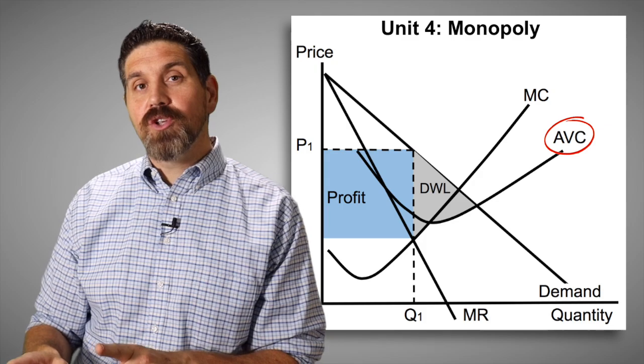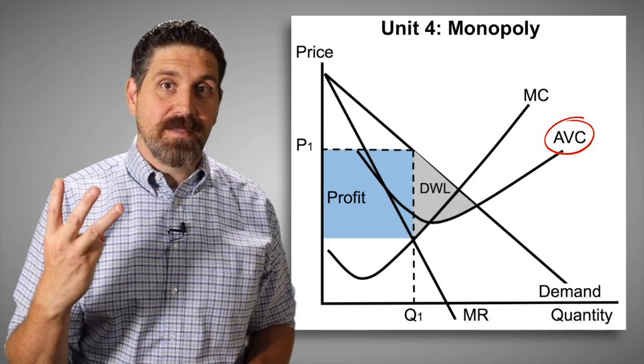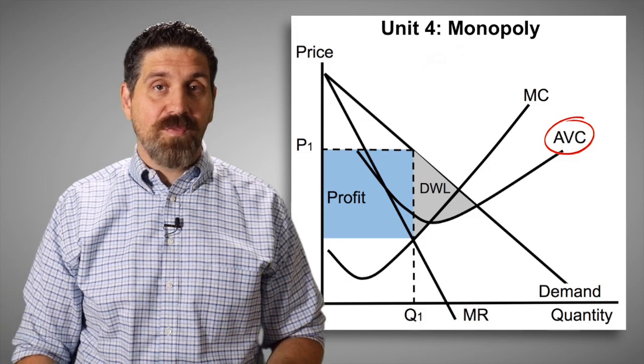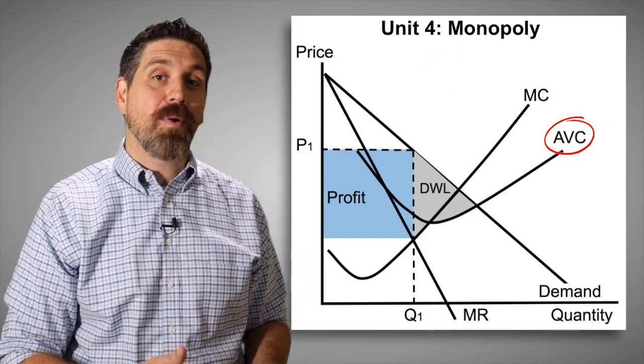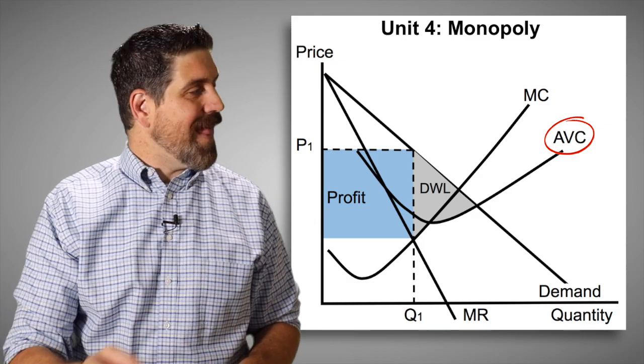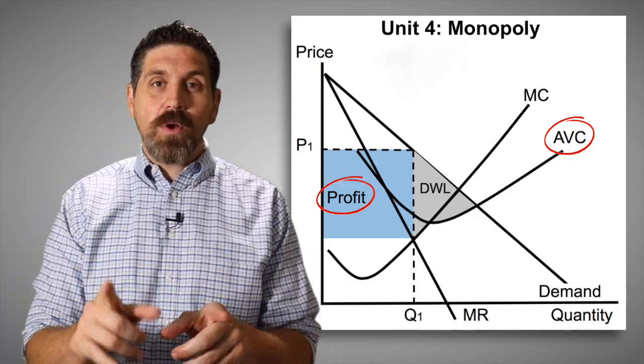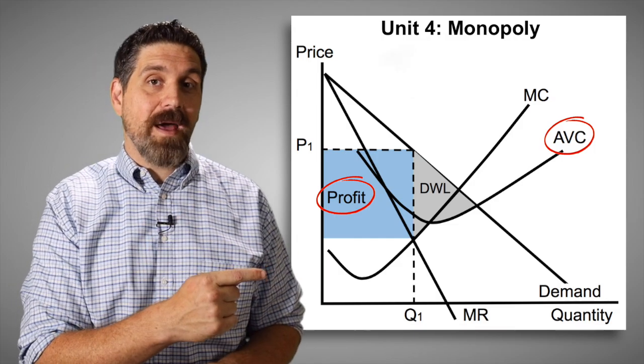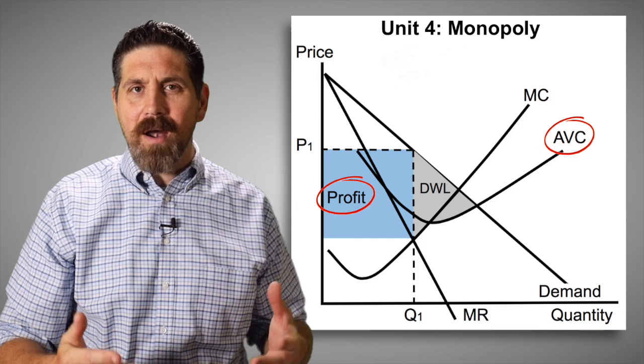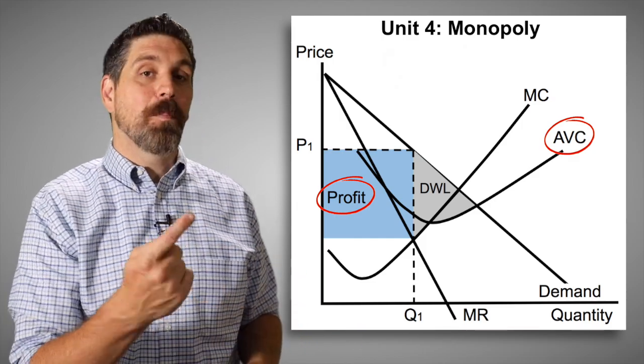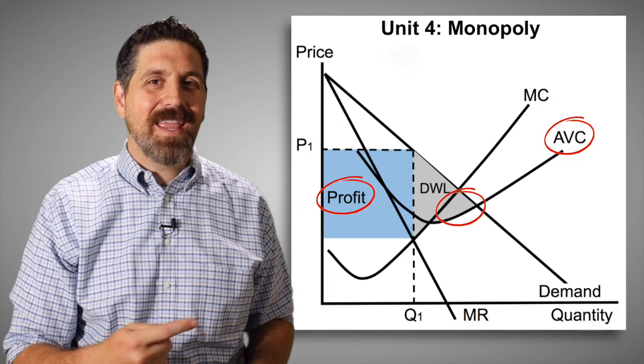But if you spot those mistakes for perfect competition, you can do the same thing for a monopoly graph. On this graph, there's three mistakes. But most of the graph is actually correct. We've got demand, marginal revenue, marginal cost. They're producing the profit maximizing price and quantity. That's right. But look at that ATC curve. It's labeled AVC. That's wrong. Also notice that box of profit is in the wrong spot. It should go down to the average total cost curve, not keep going down to where MR equals MC. That box is too big. And the deadweight loss is incorrect. It shouldn't include this area here at all.